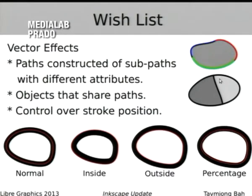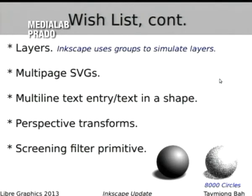Unfortunately SVG2 is not going to include everything we want. For example, it's not going to include vector effects — things like being able to define a path as a bunch of subpaths, which is interesting for map makers who have two countries touching and want to share just one path for that boundary. Control over stroke position was part of vector effects and won't be in SVG2. Things like multi-page SVGs, multi-line text entry, text in a shape — those may or may not happen in SVG2. Perspective transforms should happen because it's in CSS3. There's also a screening filter primitive that won't be in soon, and warp text — being able to warp text between two lines — is something people have asked for.